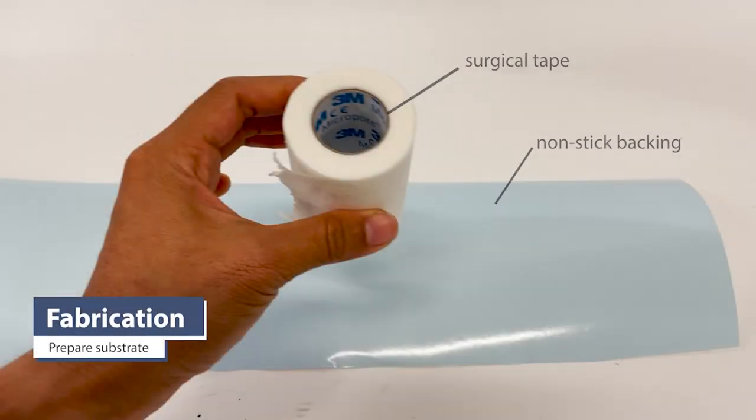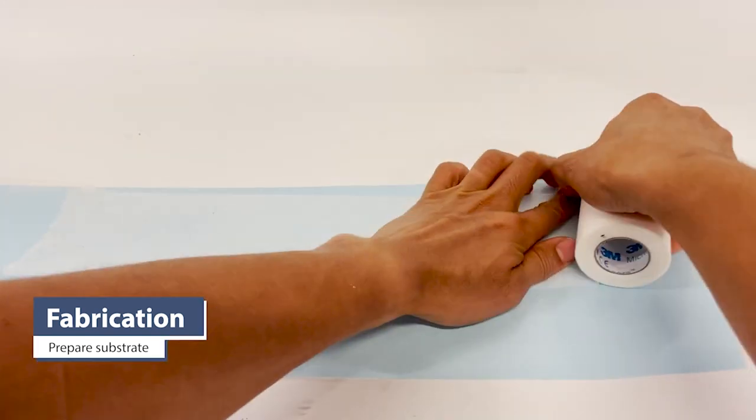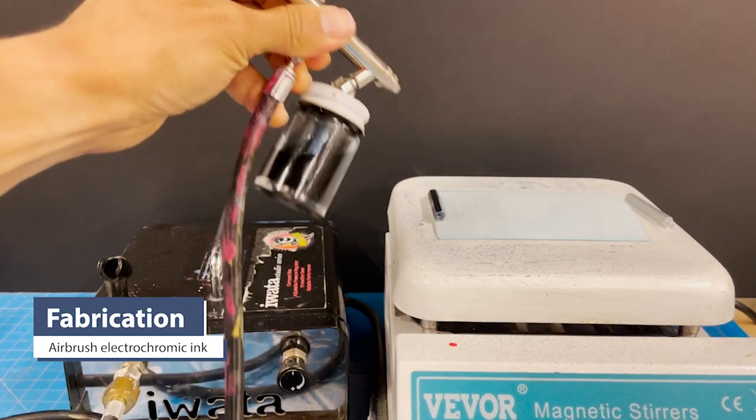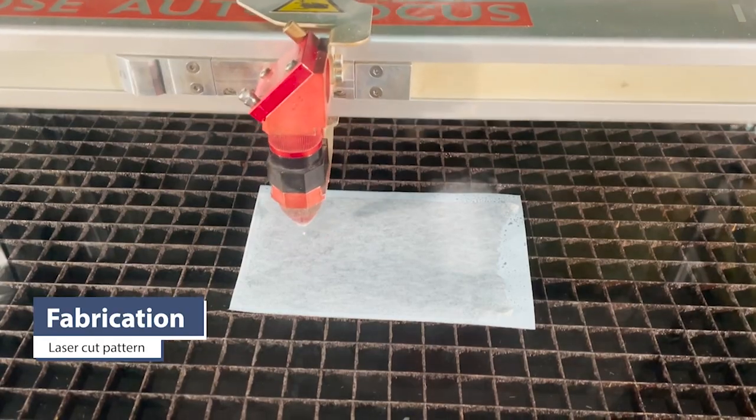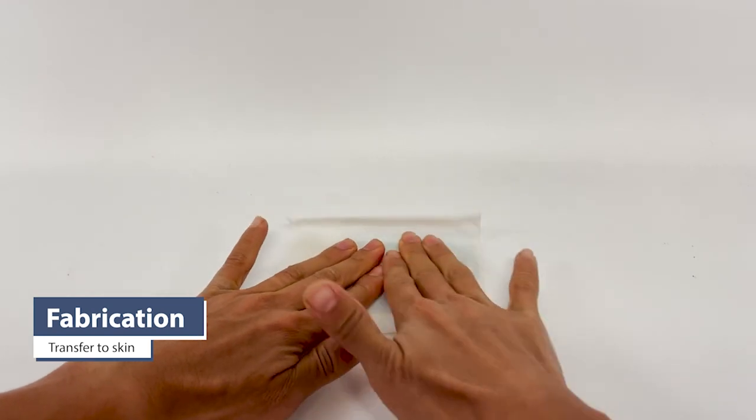The fabrication of Lotio is DIY-friendly and can be done in a few minutes. First, a surgical tape substrate is sanded smooth. Next, an electrochromic ink is airbrushed onto its surface. A laser cutter is then used to pattern the substrate, and transfer tape is used to transfer the design onto the skin.